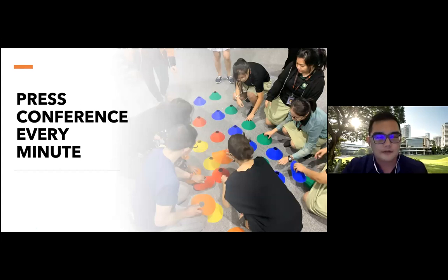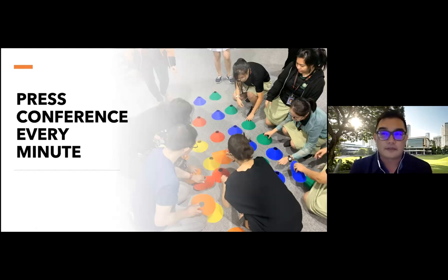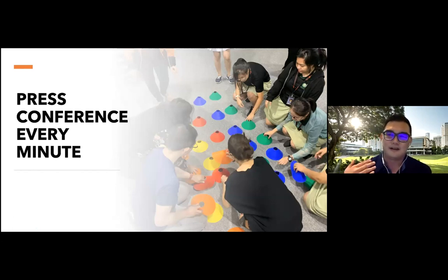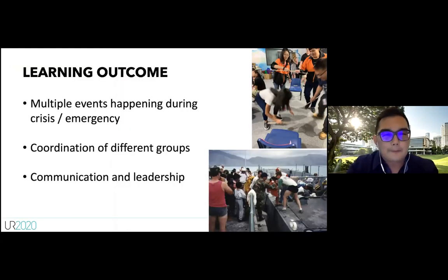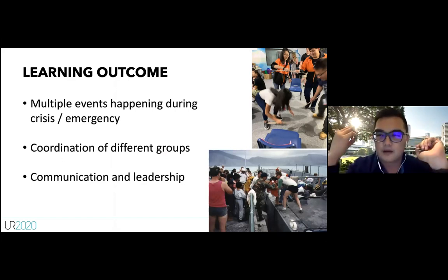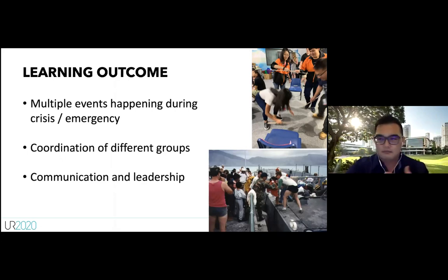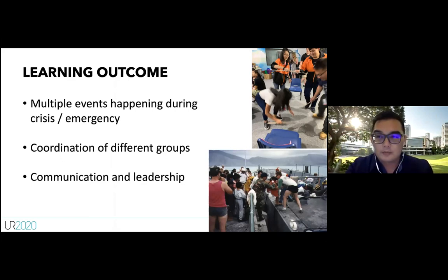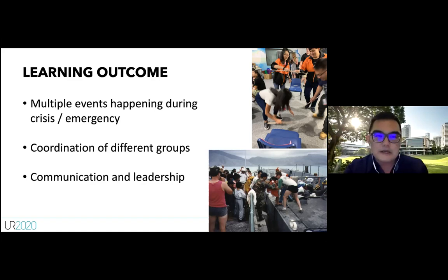The fifth game, 'Press Conference Every Minute,' is often played first when a group seems lethargic because it requires a lot of running and hands-on activity. It captures how, during a crisis, a central government agency must coordinate multiple concurrent events — fire hazards, security issues, planning — across different timescales while keeping the public informed.